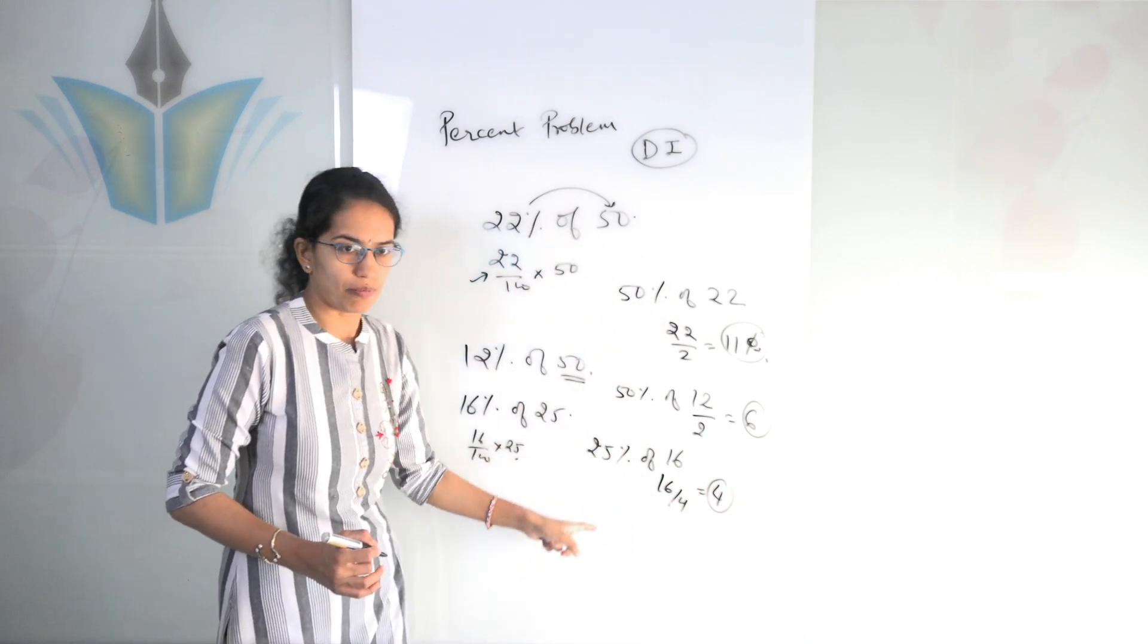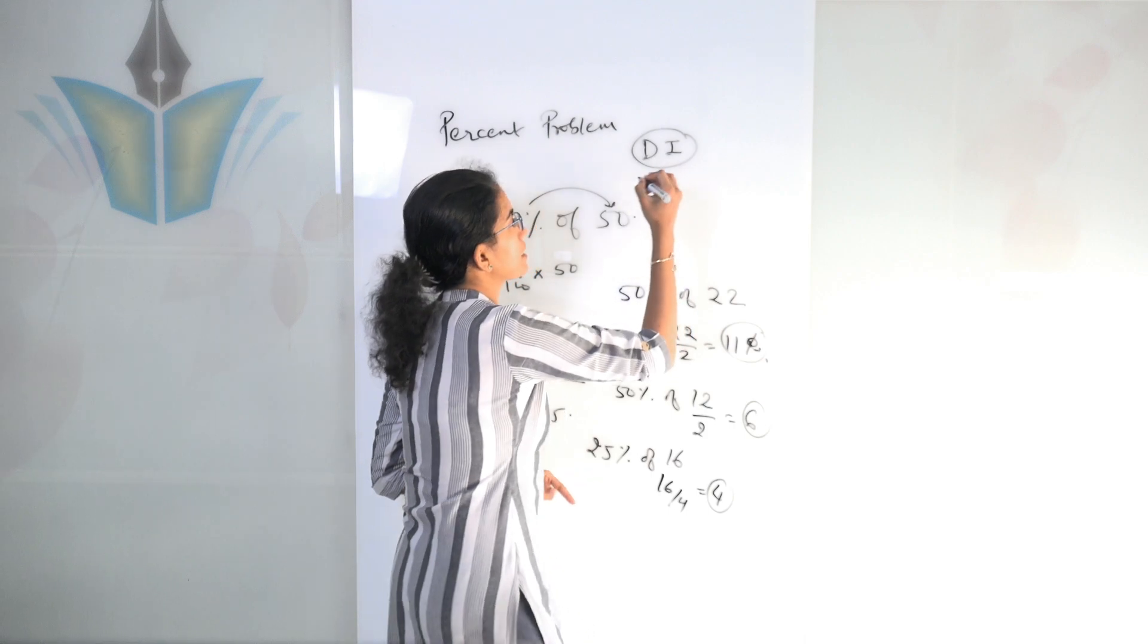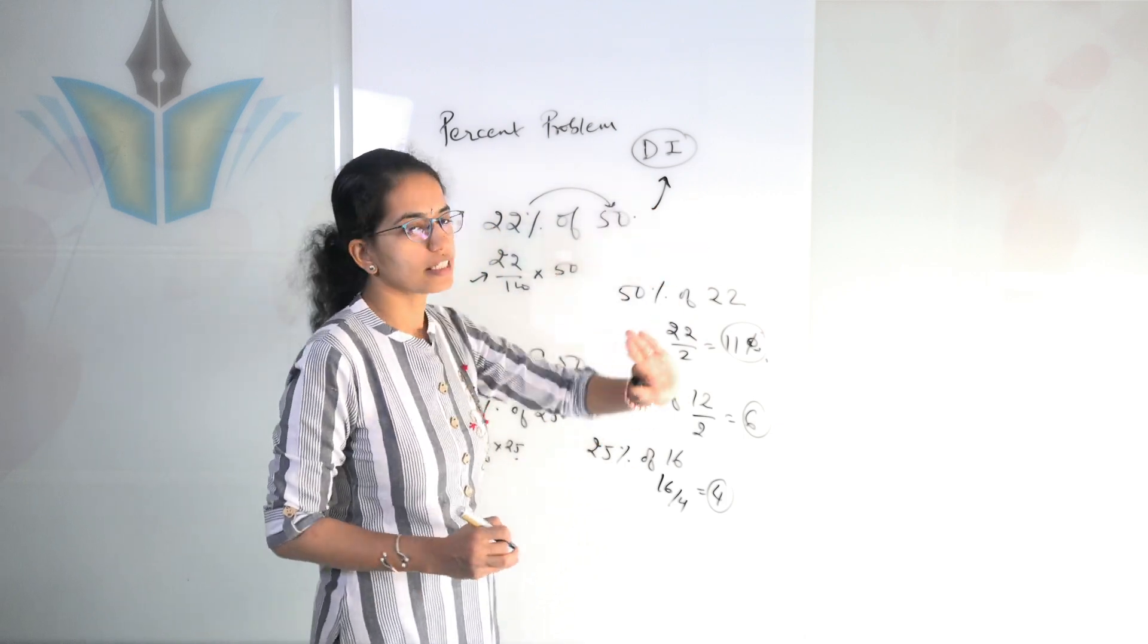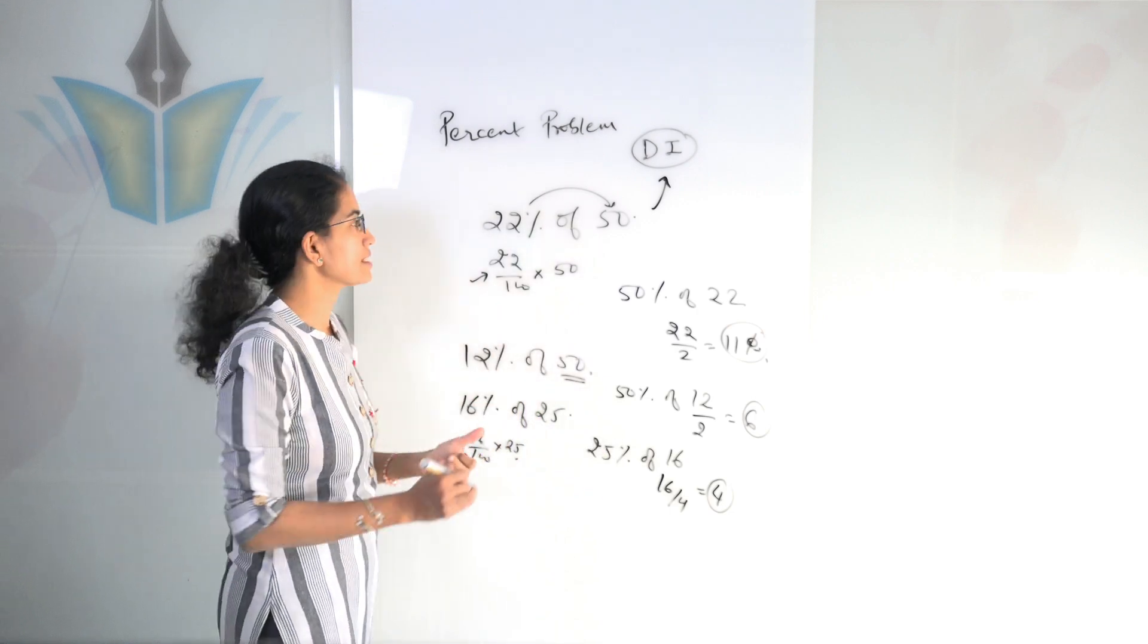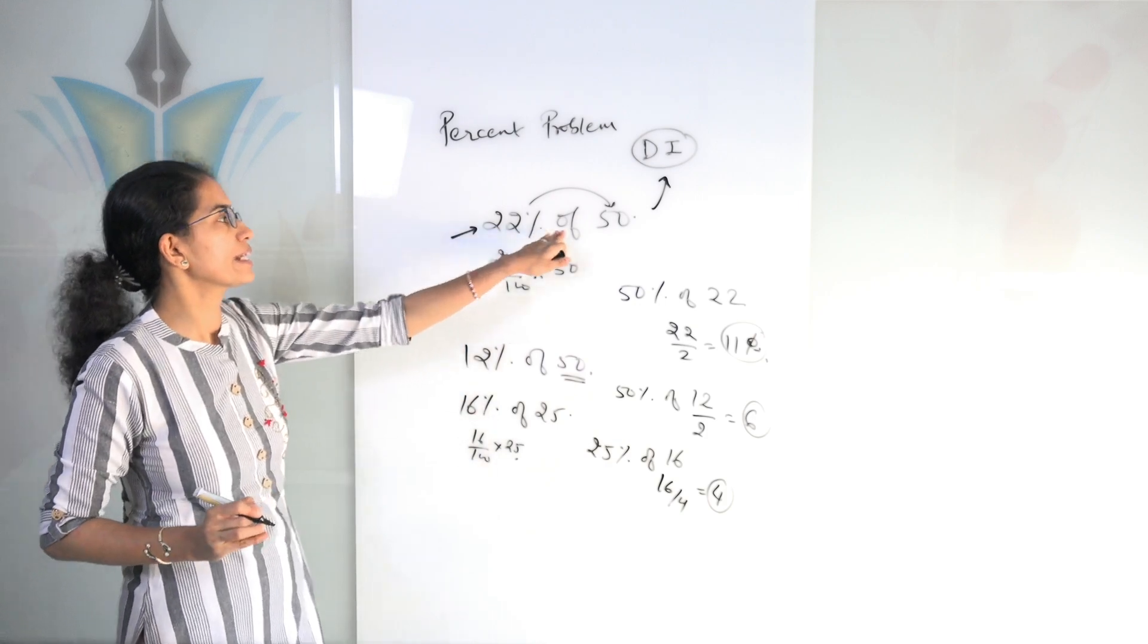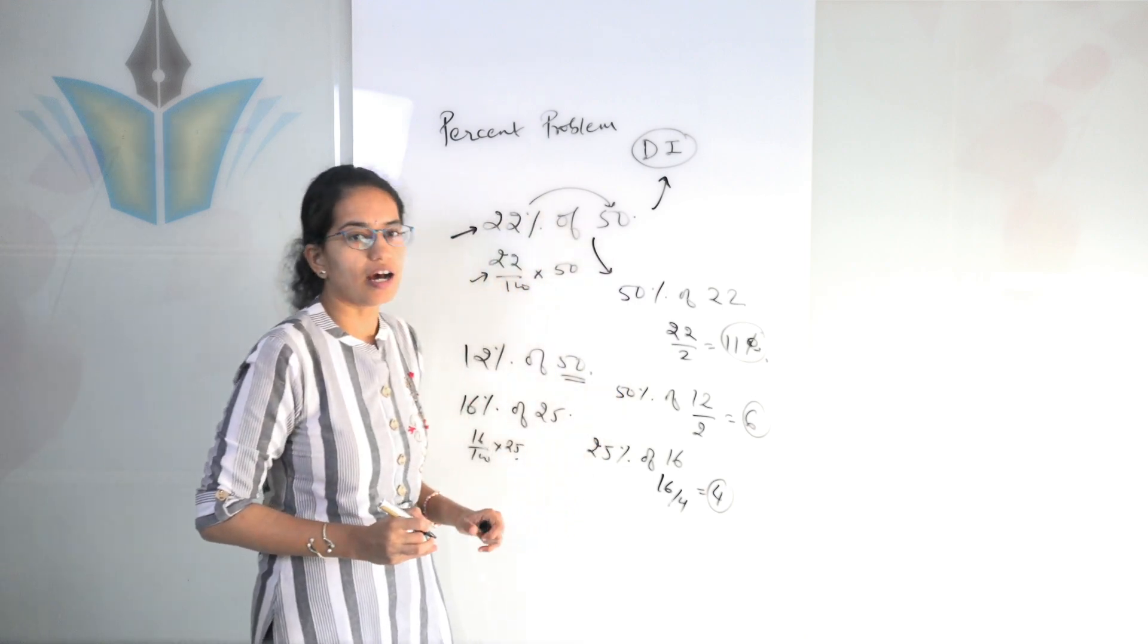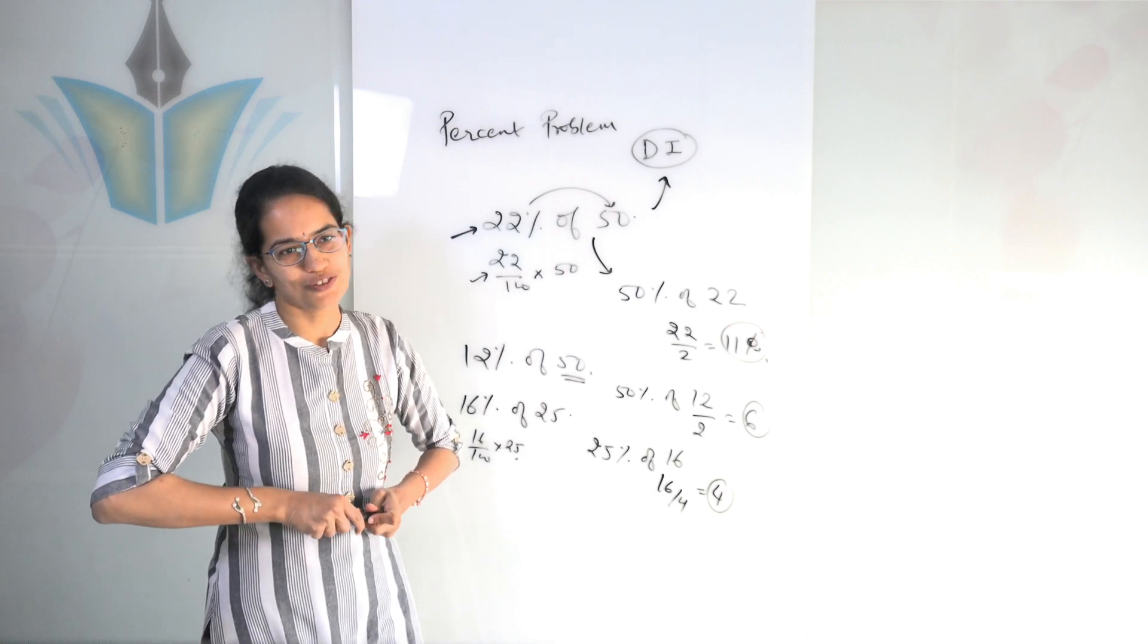Now these kind of shortcut problems or shortcut ways would help you work quicker when you are asked questions related to data interpretation. Because in most of the exams we have seen recently, the data interpretation questions are lengthier. Now they are not lengthy in the sense that these kind of calculations would come into play. But if you are doing it this way, it would definitely take more time. But if you apply a simple logic and do it vice versa, then you would achieve the question and the solution at a much faster pace.